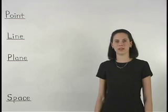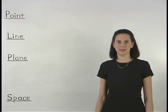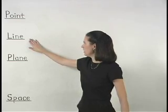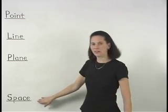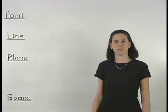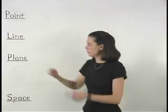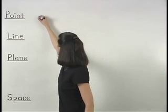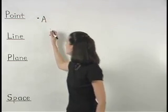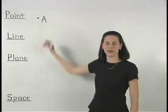In our study of geometry, we start out with the following four ideas: point, line, plane, and space. The most basic figure in geometry is called a point. For example, point A. Notice that a point is usually labeled with a capital letter.